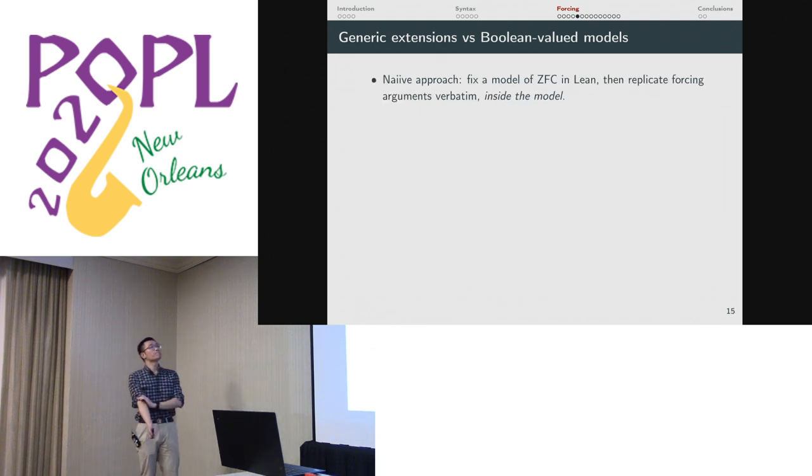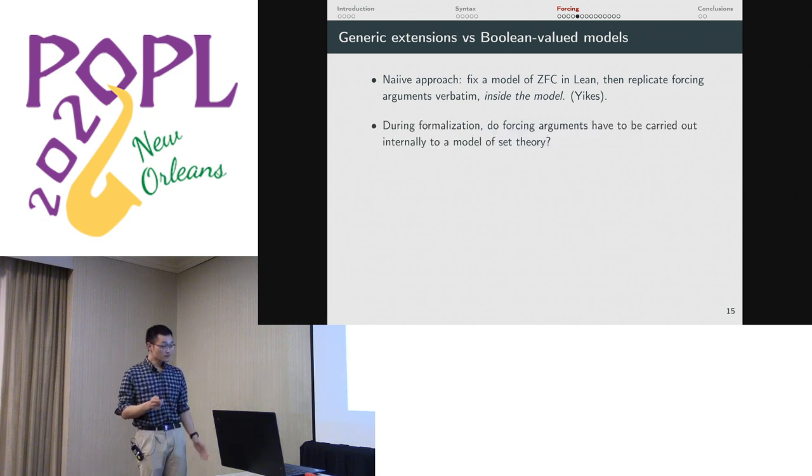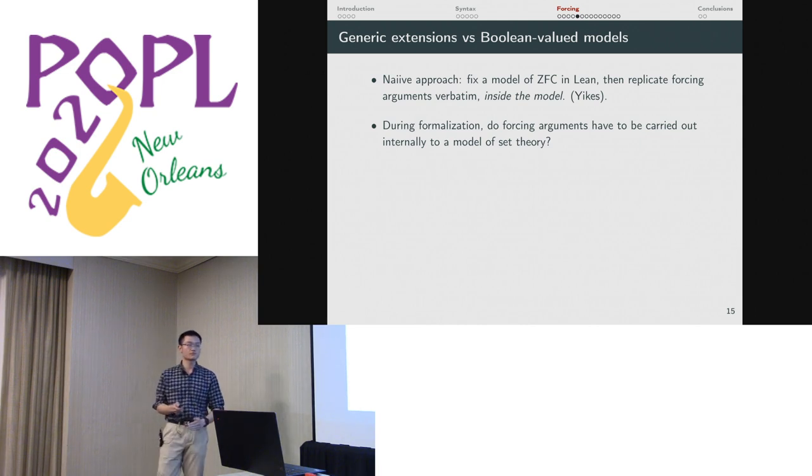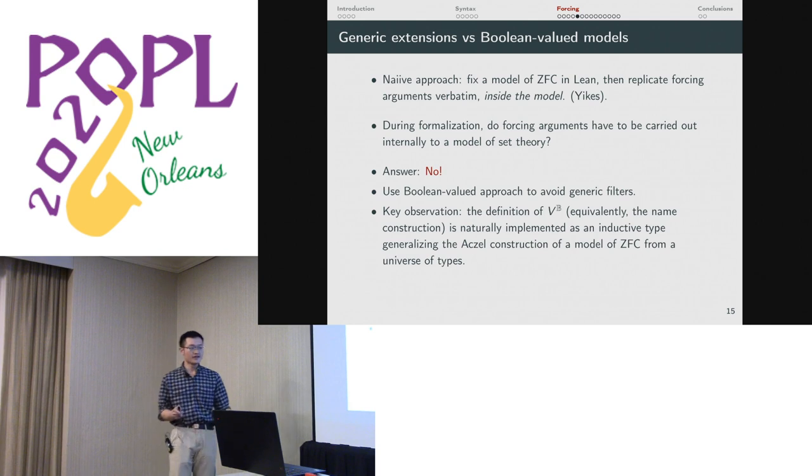Naively, you could just fix a model of ZFC, or maybe you just assume one as an axiom, and then you just replicate all the arguments word for word. Yikes, we don't want to do that. So the important question is, do we have to internalize all the arguments in some model of set theory? Because if we do, that means the proofs get much slower and possibly much uglier. The answer is no. We use the Boolean-valued model approach to avoid having to use filters. That makes the arguments simpler.